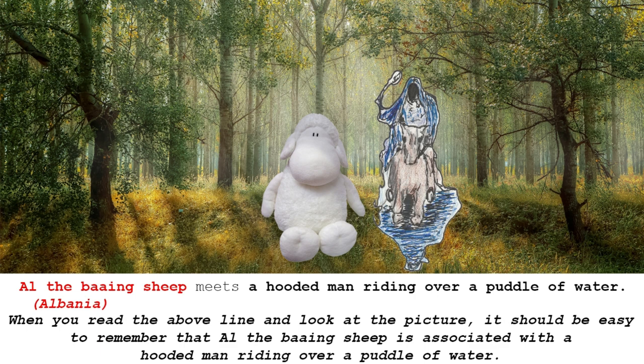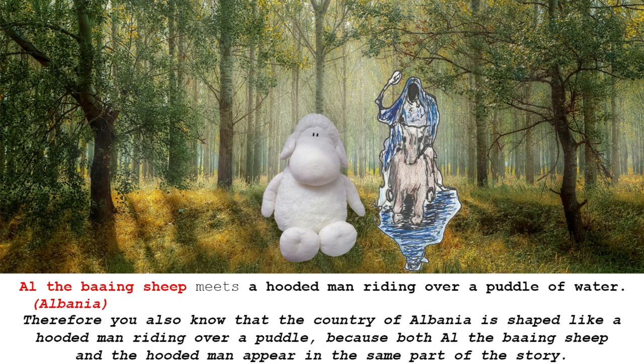It also contains the outline of the country Albania, which looks like a hooded man riding over a puddle of water. When you read the above line and look at the picture, it should be easy to remember that Al, the baaing sheep, is associated with a hooded man riding over a puddle of water. Therefore, you also know that the country of Albania is shaped like a hooded man riding over a puddle, because both Al, the baaing sheep, and the hooded man appear in the same part of the story.